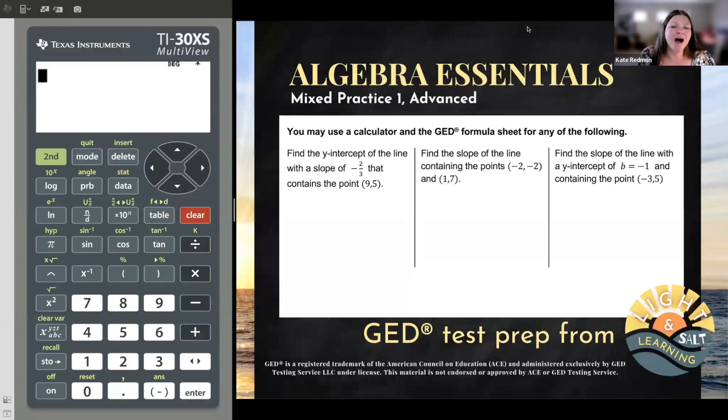First one says, find the y-intercept of the line with a slope of negative two-thirds that contains the point 9,5. Now, I want you to notice what you're looking for as well as what you've been given in order to choose the correct formula. So first of all, let's take a look at what they're asking me to find. They're asking me to find the y-intercept.